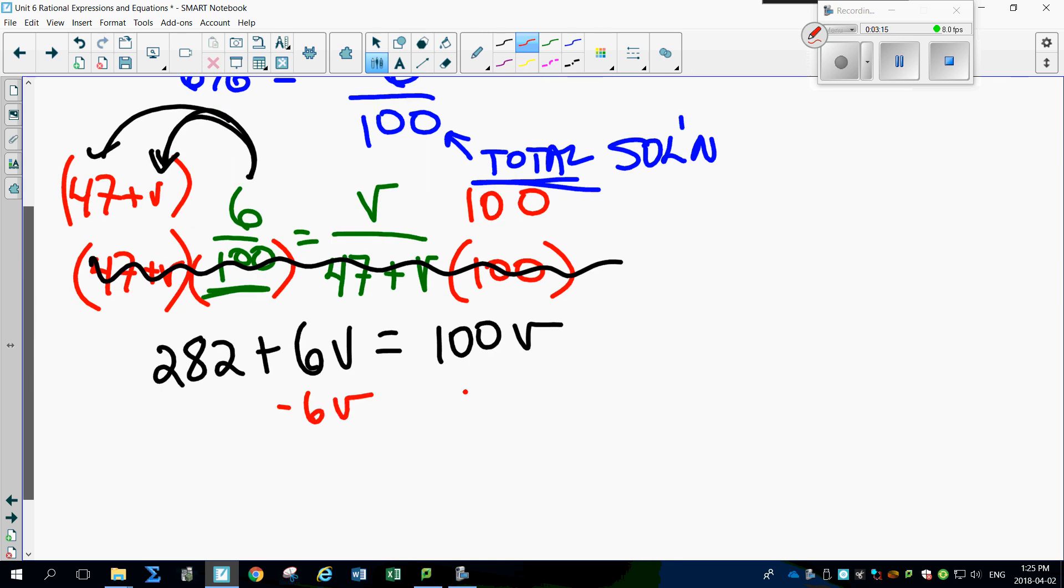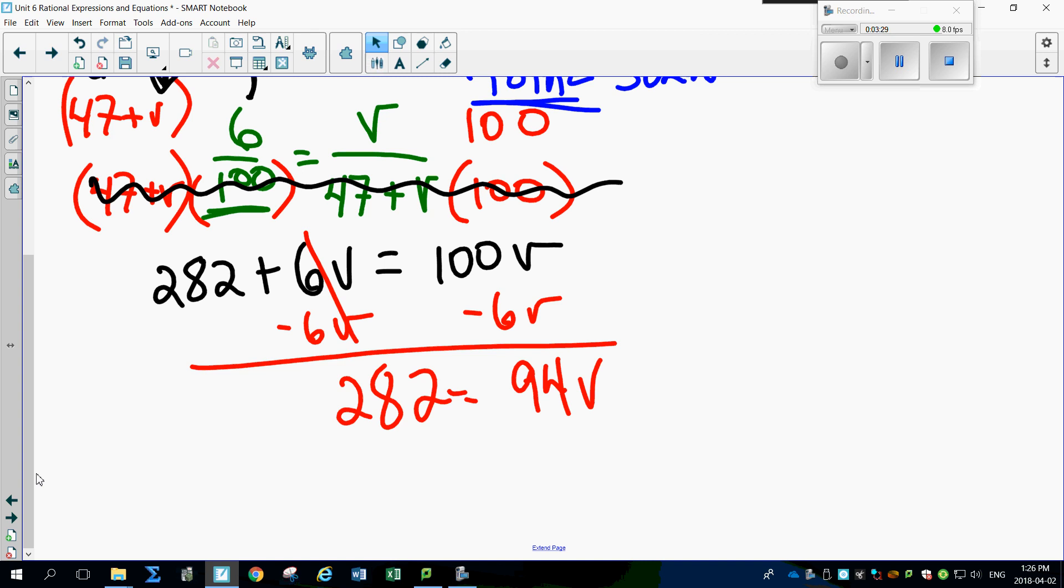Simple, simple. Subtract 6V from both sides. That's gone, leaving you 282 equals 94V. Divide each side by 94, and you have V equaling 3 liters.